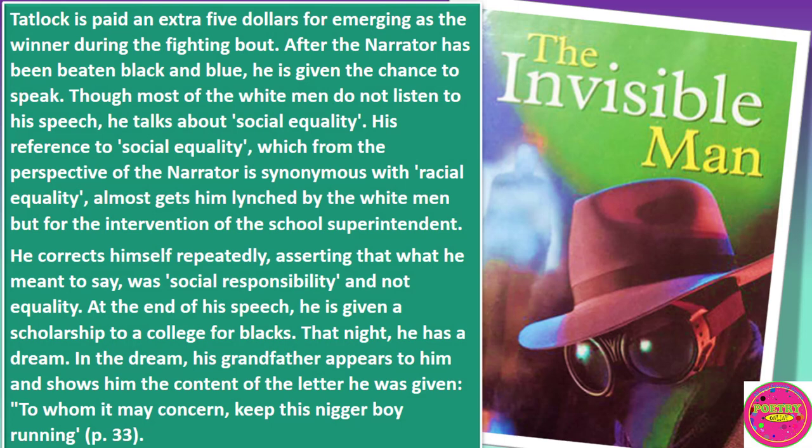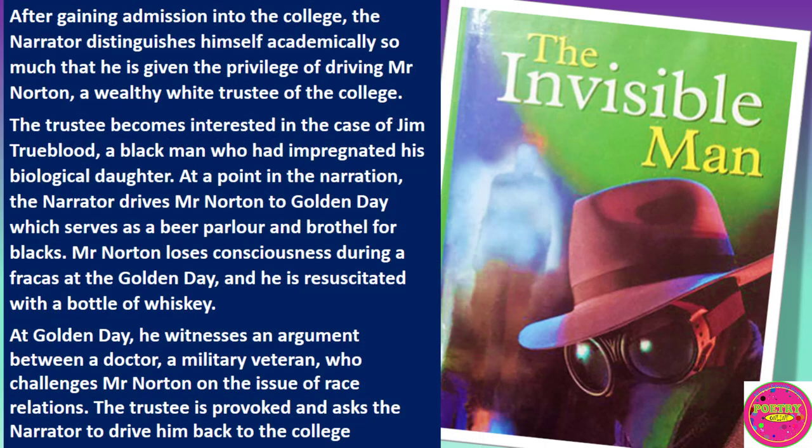Tatlock is paid an extra five dollars for emerging as winner during the fighting bout. After the narrator has been beaten black and blue, he is given a chance to speak, though most of the white men were not listening to his speech. He talks about social equality. His reference to social equality, which from the perspective of the narrator is synonymous to racial equality, almost gets him lynched by the white men. But for the intervention of the school superintendent, he corrects himself repeatedly, asserting that what he meant to say was social responsibility and not social equality. At the end of his speech, he is given a scholarship to a college for blacks. That night he has a dream. In the dream his grandfather appears to him and shows him the content of the letter he was given: 'To whom it may concern, keep this nigger boy running.'